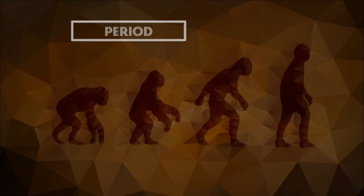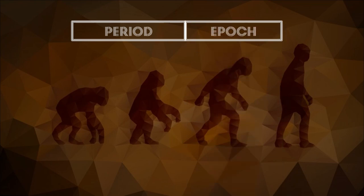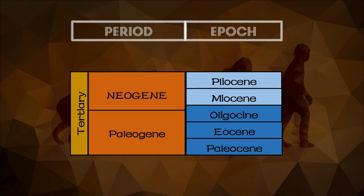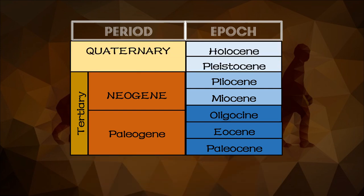The Tertiary and Quaternary periods of the Cenozoic era are further divided into time intervals called epochs. Epochs assist geologists and paleontologists in further specifying the conditions related to a particular time. The earliest epochs of the Cenozoic era occurred in the Tertiary period under the Paleogene. Under the Paleogene, we have the Paleocene, Eocene, and Oligocene epochs. Under the Neogene in the Tertiary period, we have the Miocene and Pliocene. And under the Quaternary period, we have the Pleistocene and Holocene epochs.